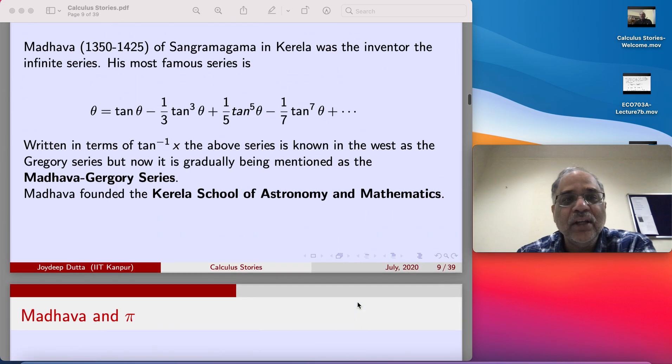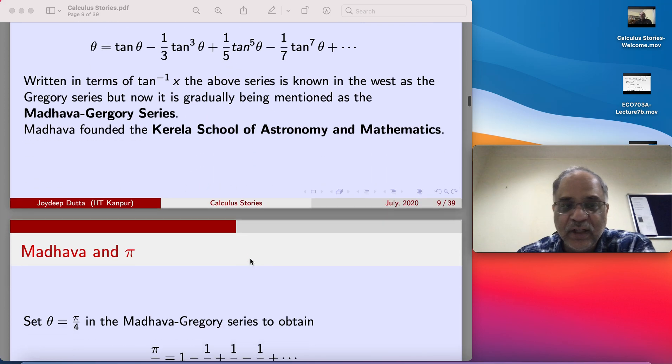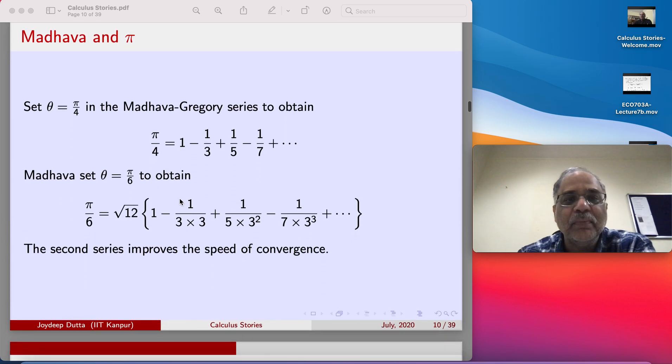So let us put theta equal to pi by 4 where tan theta is 1 in this case, in the Madhava series, or the Madhava-Gregory series. Then pi by 4 is exactly this.